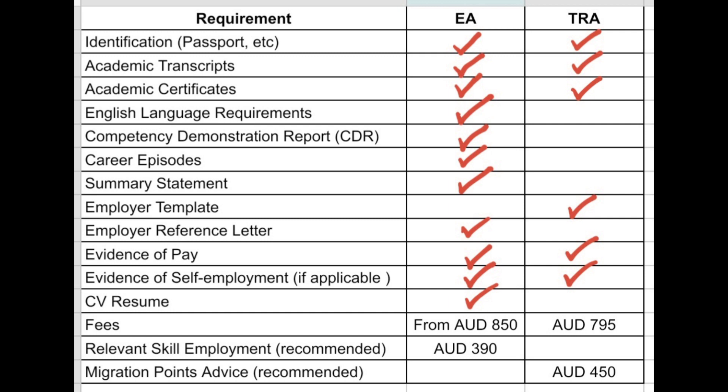As you can see, Engineers Australia requires more documentation compared to TRA. Regarding fees, TRA is a little bit cheaper than EA. However, if you include additional services such as Relevant Skilled Employment or Migration Points advice, you would actually have almost the same price between the two.